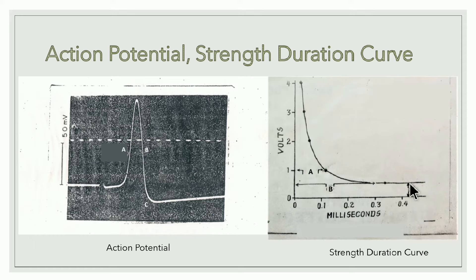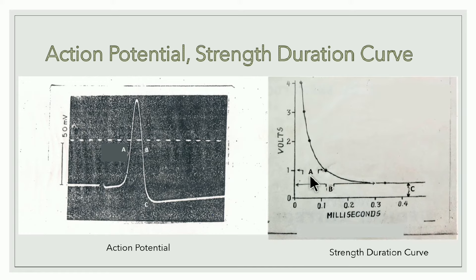If the threshold stimulus is 0.5 millivolts, then C (rheobase) is 0.5mV. Point B is the utilization time — the time taken for the rheobase to produce a response. Point A is the chronaxie — the time taken to respond when the stimulus strength is double the rheobase. So A is chronaxie, B is utilization time, and C is rheobase.